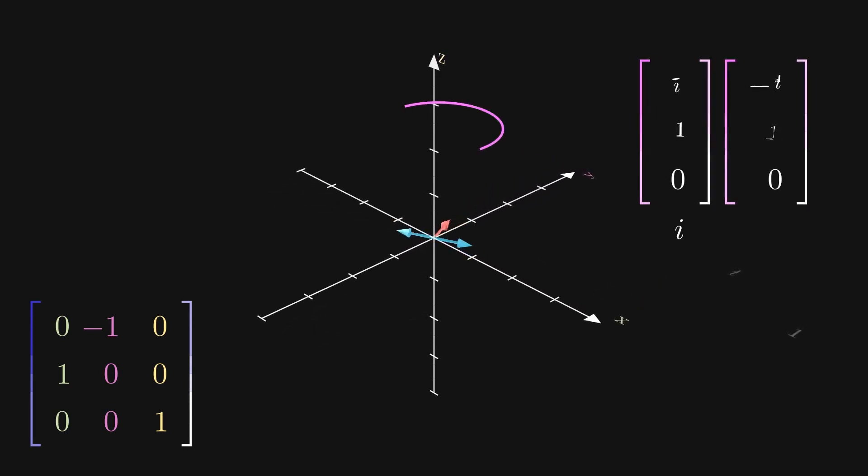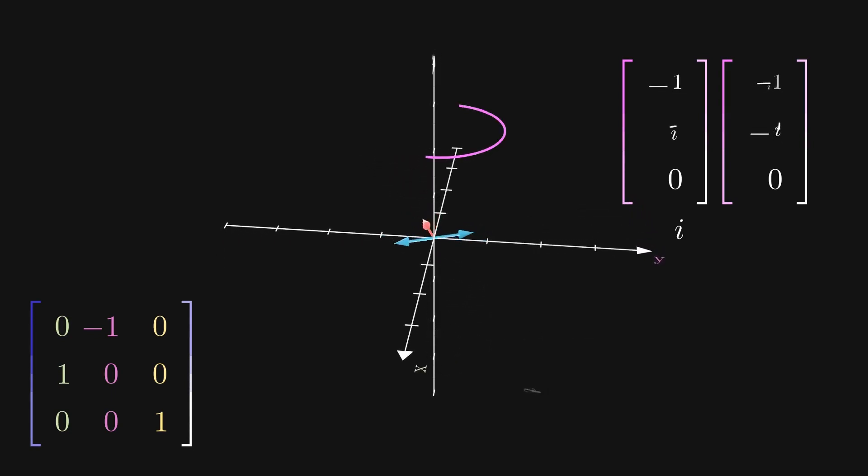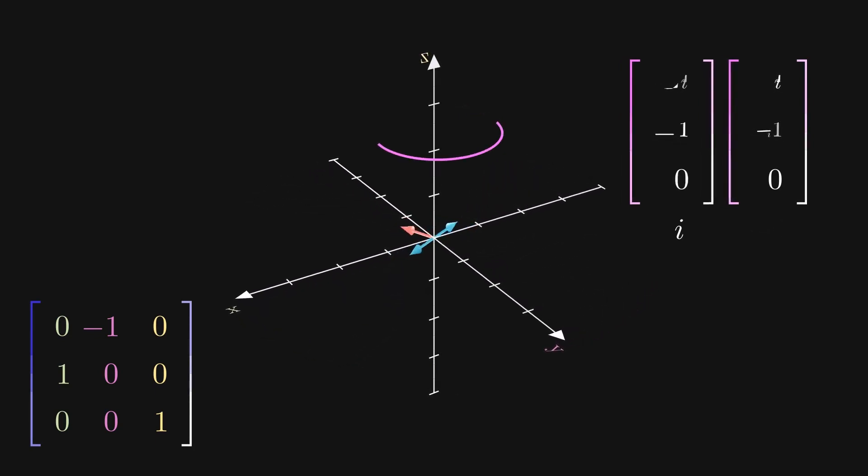This way, we can visualize our two complex eigenvectors as four real ones, and we can visually see how rotating the components of the eigenvectors correspond to multiplying them by i and negative i respectively.